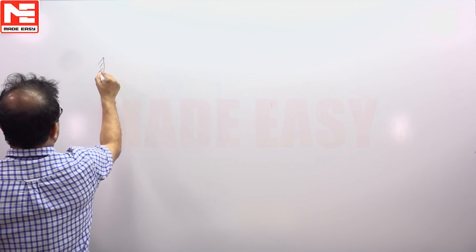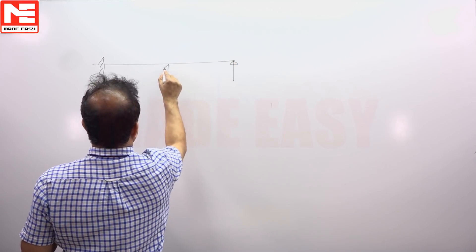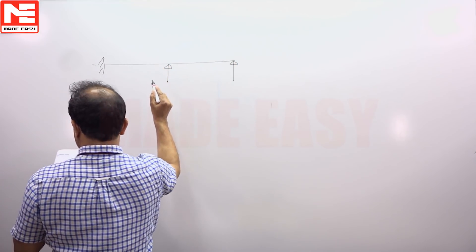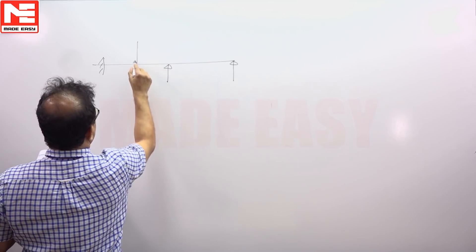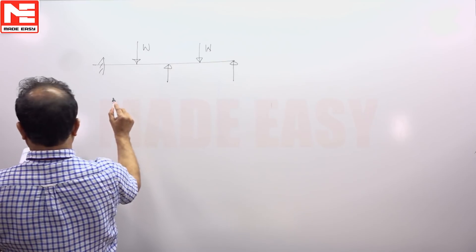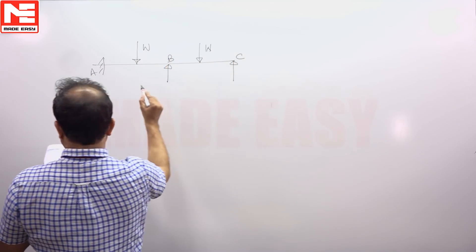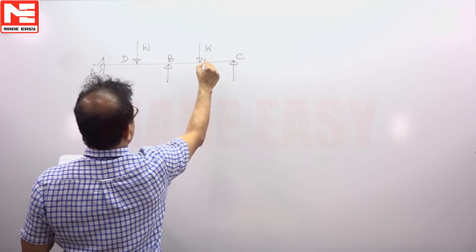We will take this is a beam we have, say a two span continuous beam. This is subjected to a load W, also a load W. This point is A, B, C, D and E.